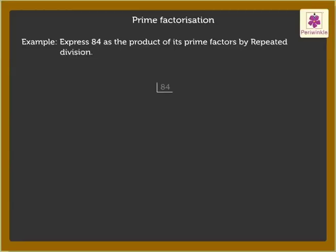Let us solve an example. Express 84 as the product of its prime factors by repeated division. We always begin with the smallest prime number which divides the given number. 84 is an even number, so divide 84 by 2 to get 42.